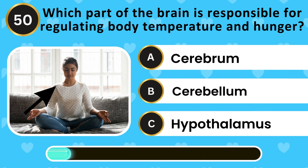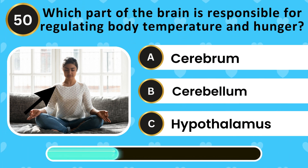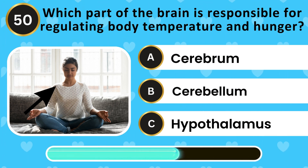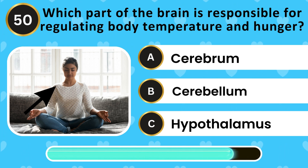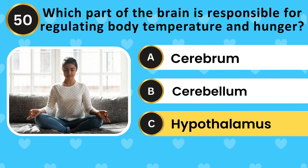Which part of the brain is responsible for regulating body temperature and hunger? Cerebrum, cerebellum, hypothalamus. The answer is hypothalamus.